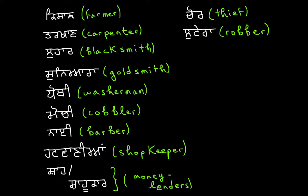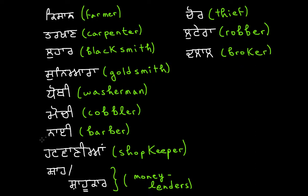Let's talk about a broker — those that we see in maybe insurance firms. Those individuals would be called Dalal. It's a Dada, a Lala, a Kanna, and a Lala — Dalal. This would be a broker. Then let's talk about a lawyer. A lawyer would be called a Vakeel. It's a Vava, a Kakka, a Bihari, and a Lala — Vakeel. Vakeel would be a lawyer.